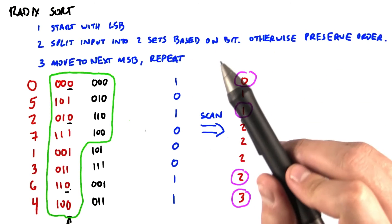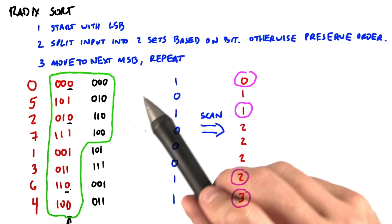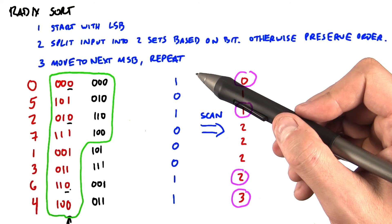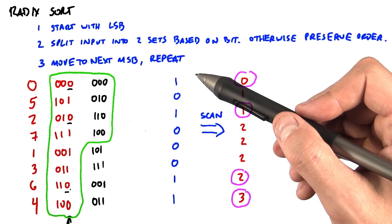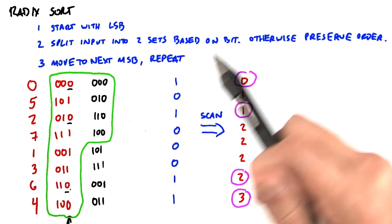Overall, radix sort is a fairly brute force algorithm, but it's both simple and fast. Recent GPUs can run radix sort on 32-bit keys at a rate of over a billion keys sorted per second.